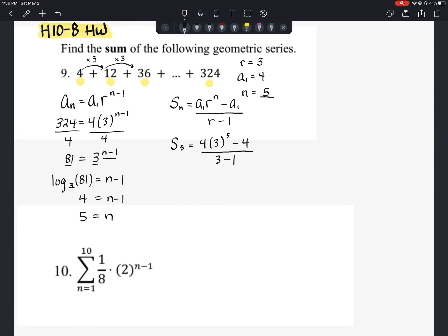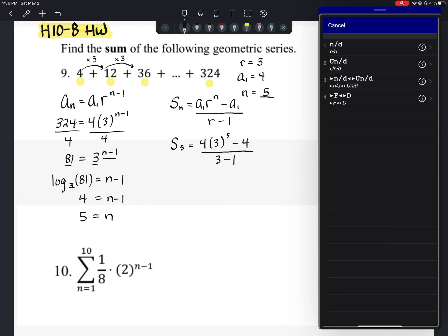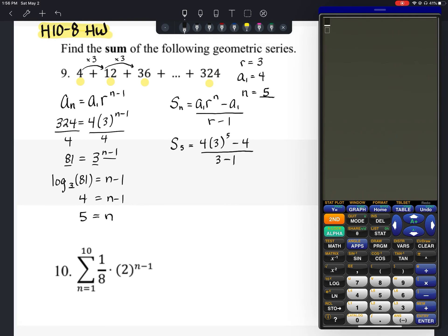And if you want, you can just take that and put that into the calculator here. Let's see what we get. We've got 4 times 3 to the 5th power. Then we're going to subtract 4. And then we're going to divide by 3 minus 1, which is just 2. So we get that the sum of the 5 terms here should equal 484.